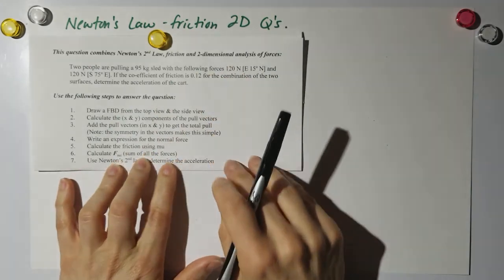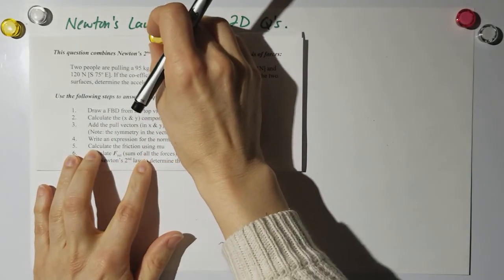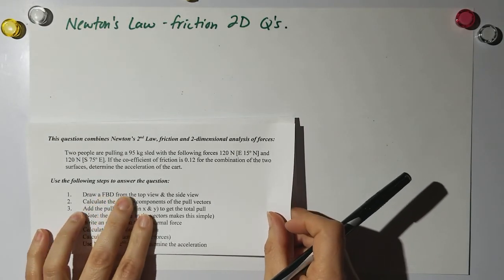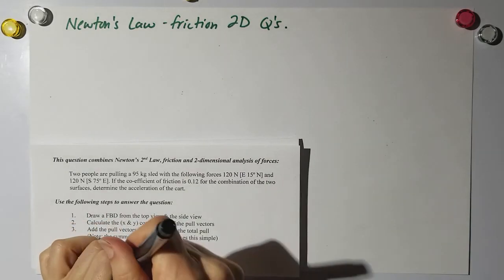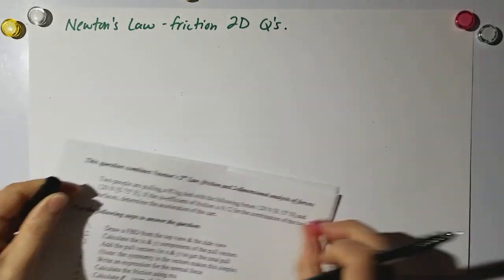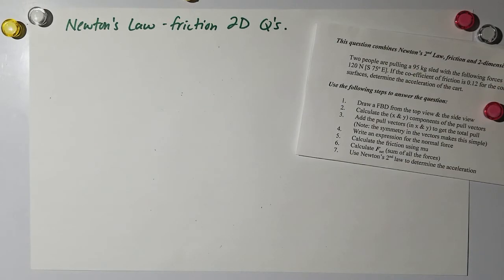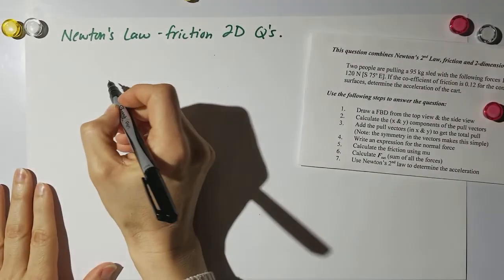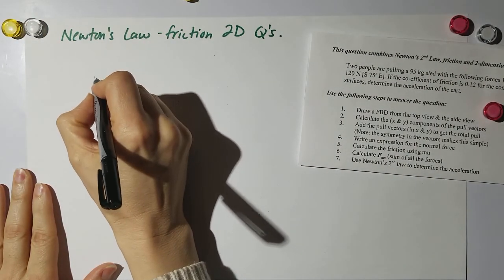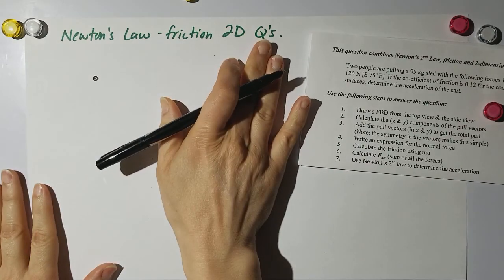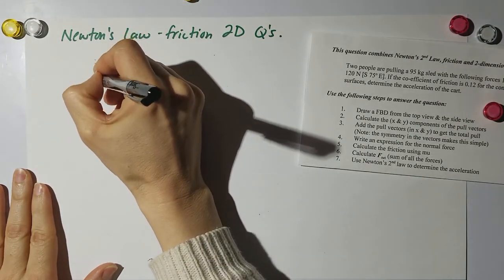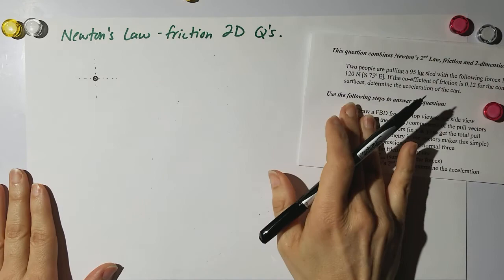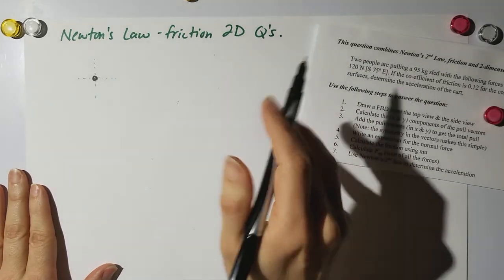I give you a bunch of steps to follow, so I'm going to take this off the screen while I draw the picture. It says draw a free body diagram from the top view and the side view. From the top, if I'm looking down, here is my sled. I'll put a little set of axes here. It says I have 120 newtons east 15 degrees north, so here's my never-eat-shredded-wheat. I'm going to point east and rotate 15 degrees towards the north.